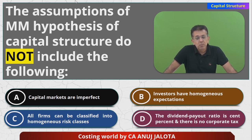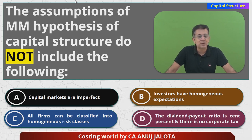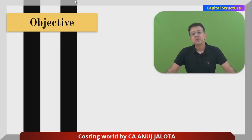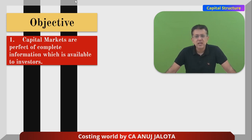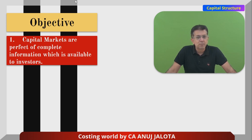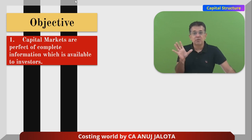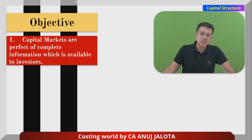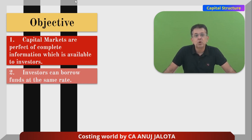Now, Modigliani and Miller had many assumptions. The main ones I'm covering now. The first assumption is: capital markets are perfect, with complete information available to all investors. This means information about a company is not hidden — it's available to all investors equally. No one has hidden information that other shareholders do not have. So all of us evaluate companies in the same way.